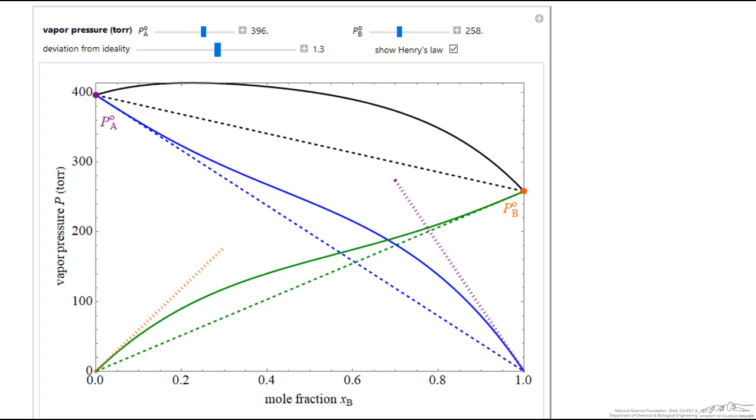At low B concentrations, we can apply Henry's Law because the curve is close to that straight line. The other dashed line for the blue curve...